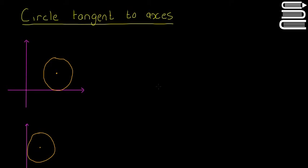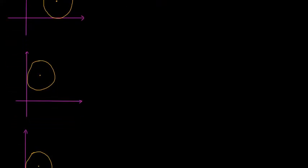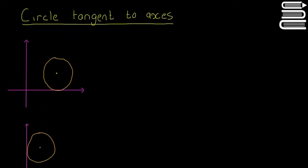In this video I'm going to quickly go through the different things that happen when a circle is tangent to one of the axes. There are three cases: it can be tangent to the x-axis, tangent to the y-axis, or tangent to both axes at the same time. In this video I'll go through the rules for each case, and in the next video we'll look at an example question.